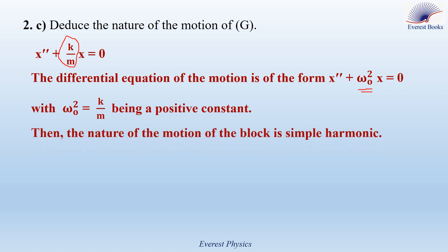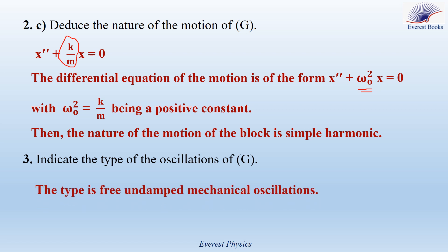So the nature of the motion of the block is simple harmonic. Part 3: Indicate the type of oscillation of G. These oscillations are free, because we don't have external intervention and we don't have friction, so the type is free undamped mechanical oscillations.